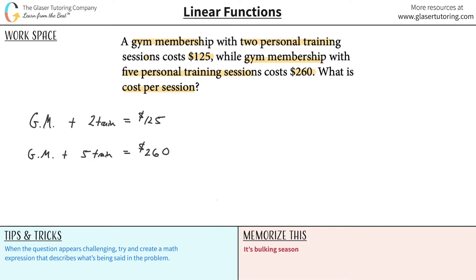So do we know what the gym membership is? No, we actually don't. So since we don't know what the gym membership is, let me write it over here. Gym membership, let's say that's going to equal x. So instead now what I'm going to do is I'm going to come back to the equation, erase GM, and I'm going to write x in both cases.